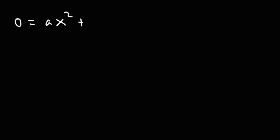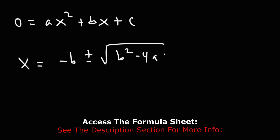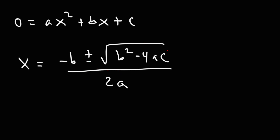Now if you set y equal to zero and need to solve for x, you could use the quadratic formula: x = (−b ± √(b² − 4ac)) / 2a. Notice the part negative b over 2a — that's the equation that gives you the axis of symmetry and the x-coordinate of the vertex. The part inside the square root is the discriminant, which equals b² − 4ac.